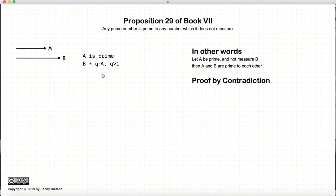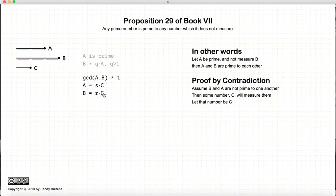So to prove this, we're going to do it by contradiction. So we're going to start with the assumption that A and B are not relatively prime. So that there is a common number C which measures both A and B, where C, of course, is not equal to 1.